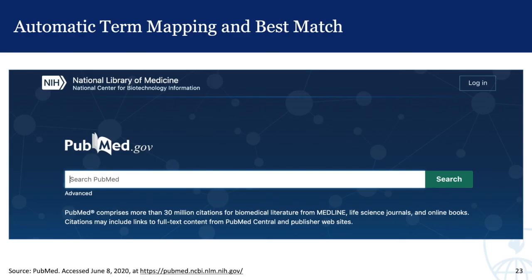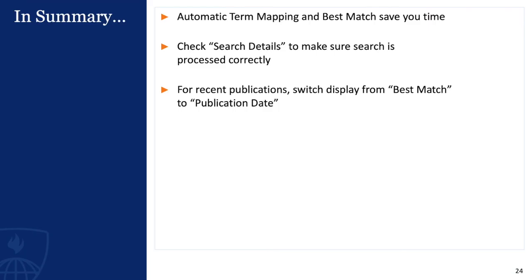The PubMed search box is designed to be user-friendly and retrieve relevant results. This is all due to the programming behind PubMed's automatic term mapping and best match features. These are powerful tools that can save time, but make sure they are processing your search as needed. Remember to always check your search details to make sure automatic term mapping is mapping to the terms the way you want it to. Also remember, if you are looking at a topic that has had a lot of recent publications or new findings, you may want to change your display options to publication date.